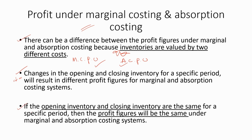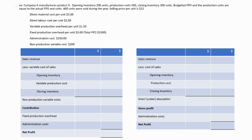If the opening inventory and closing inventory are the same for a specific period, then the profit figures will be the same under marginal and absorption costing. This means in this situation, we do not have to reconcile the profits because the profit figures are the same. Now let's do this example so you can refresh your memory on marginal cost profit and absorption cost profit.